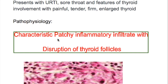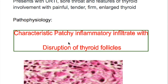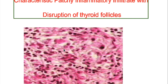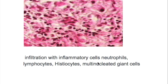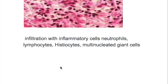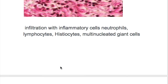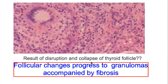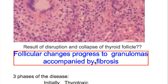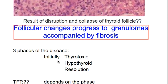What is the pathophysiology of De Quervain's thyroiditis? There is characteristic patchy inflammatory infiltrate with disruption of thyroid follicles. Infiltration occurs with inflammatory cells like neutrophils, lymphocytes, histiocytes, and multinucleated giant cells. Follicular disruption and collapse progress to granulomas accompanied by fibrosis.